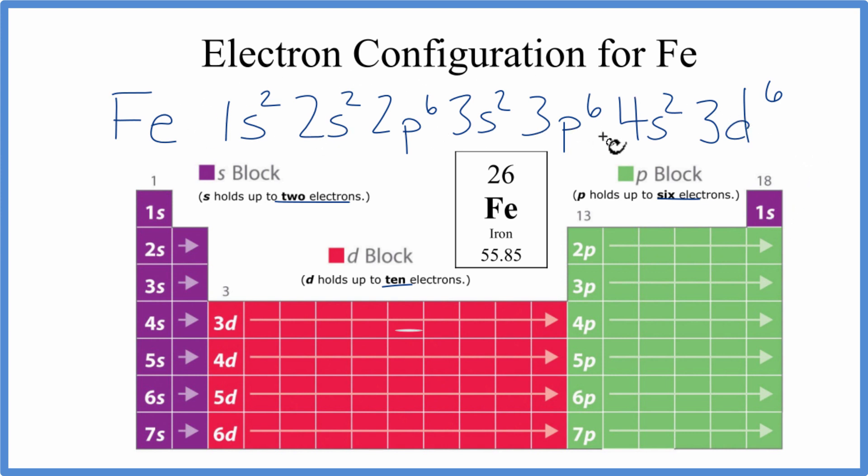That's the electron configuration for iron. When we look at iron on the periodic table, we can see that we go to 4s and then 3d, 6. So here's our 4s, 1, 4s, 2. And then 3d, 1, 2, 3, 4, 5, 6. So that's where iron is on the periodic table.